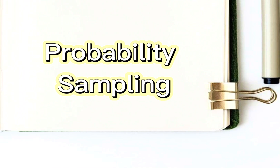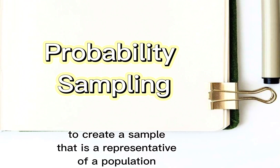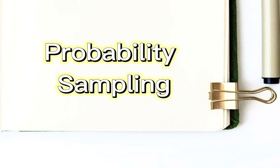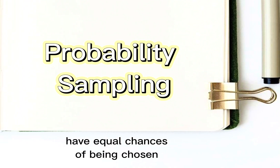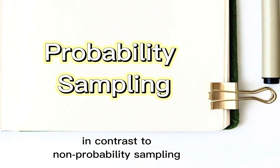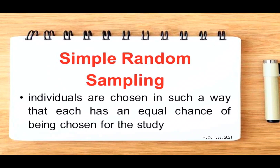Let's discuss first probability sampling. Researchers can use probability sampling to create a sample that is representative of the real-life population of interest. A sampling method must use some form of random selection to be considered probability sampling. In other words, researchers must devise a procedure that ensures the various units in their sampled population have equal chances of being chosen. For example, if a researcher is dealing with a population of 100 people, each person has a 1 in 100 chance of being chosen. This contrasts with non-probability sampling, in which each member has a different chance of being chosen. In this technique, individuals are chosen such that each has an equal chance of being selected for the study.